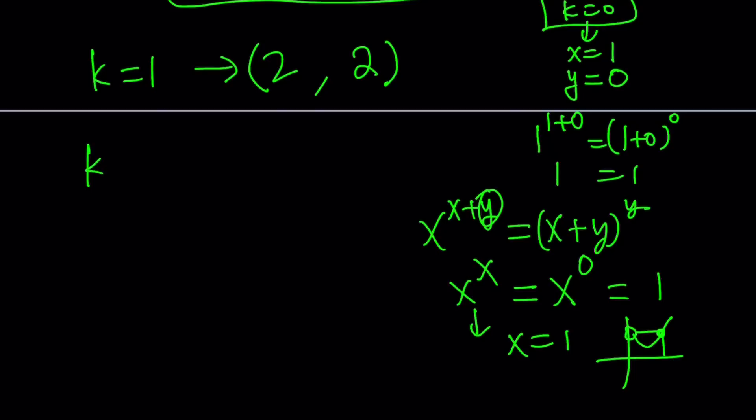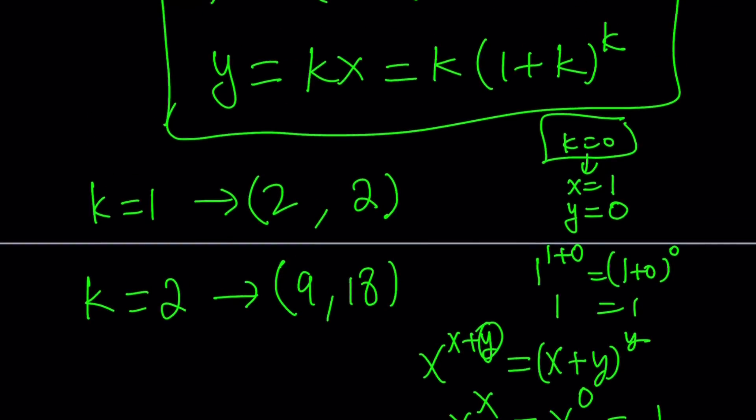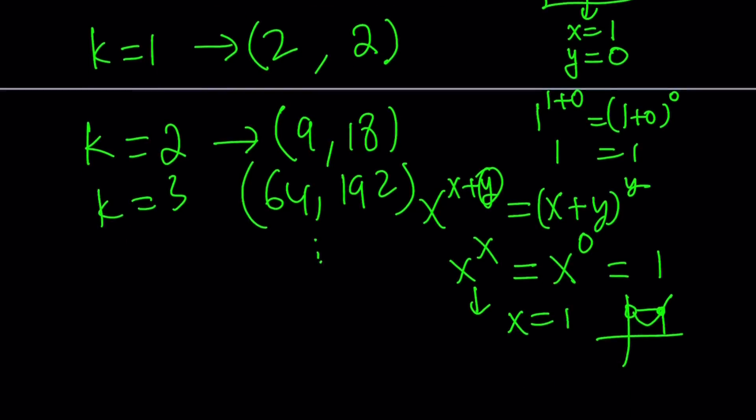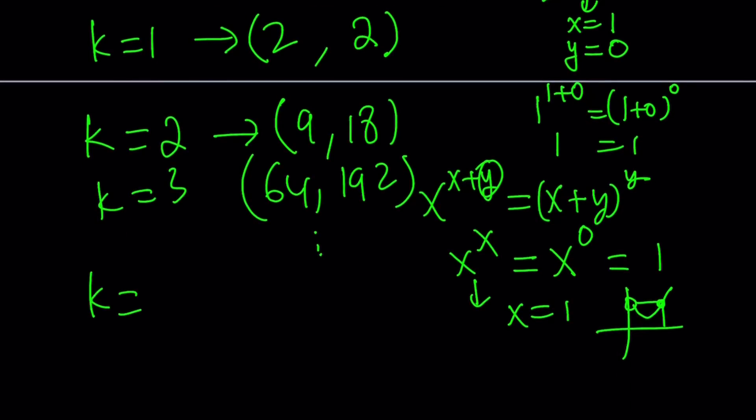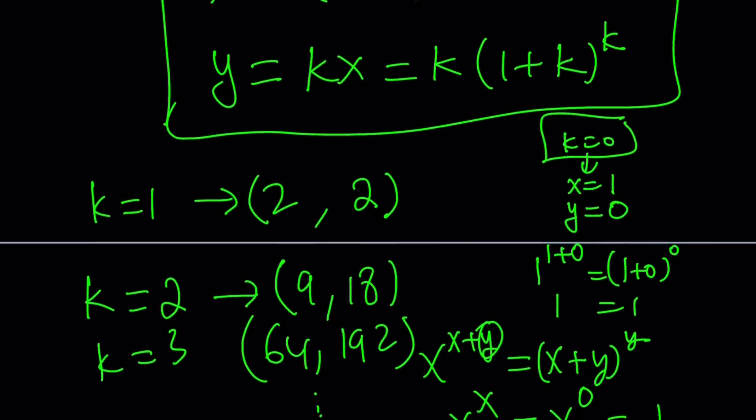So k equals one gives us that. k equals zero gives us that. k equals two is going to give you nine comma eighteen. You can easily test it out. k equals three is going to give you sixty four comma one ninety two. Notice that y is three times x. And if you replace k with one half something like a rational number, let's see what happens.